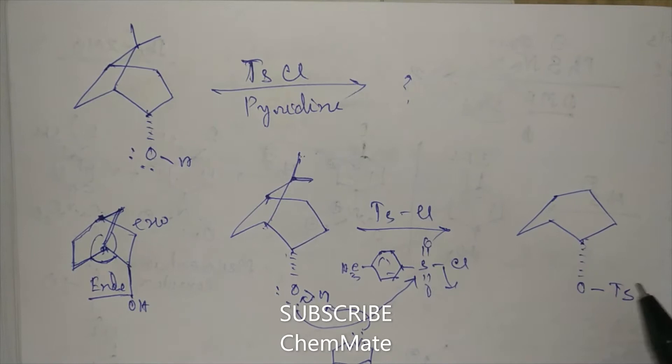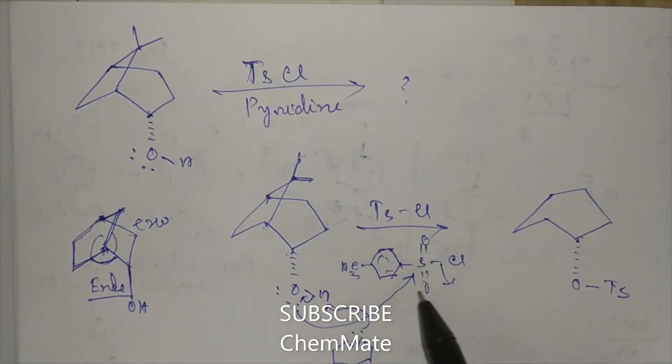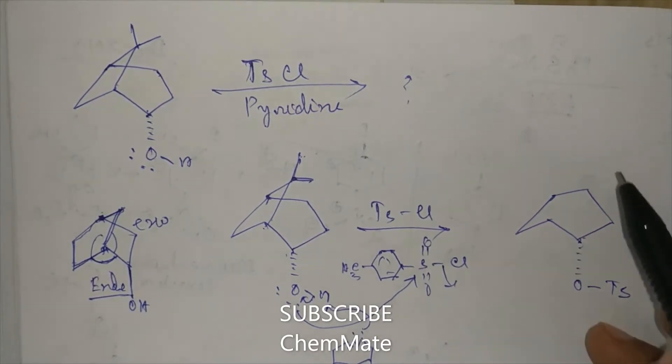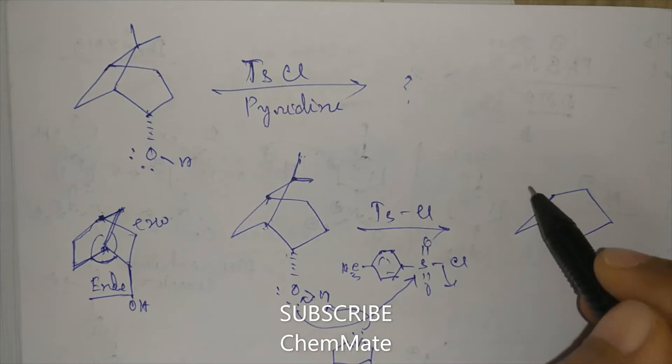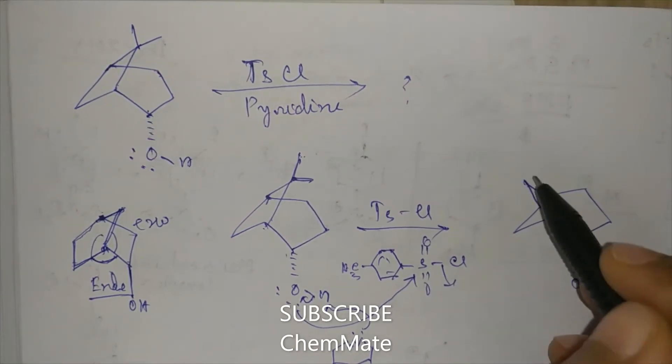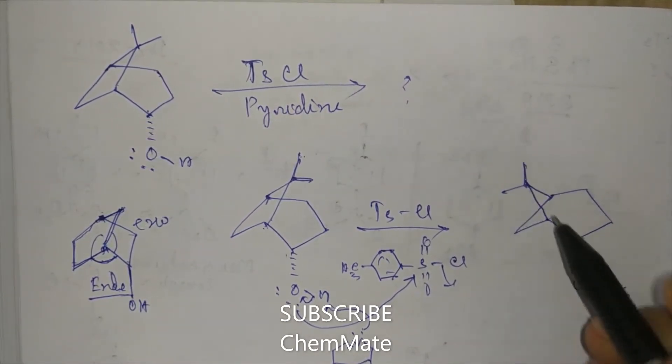So mainly what happens, this will be converted to OTs. This group is called Ts. Now here two methyl groups are there.